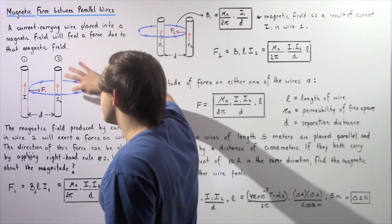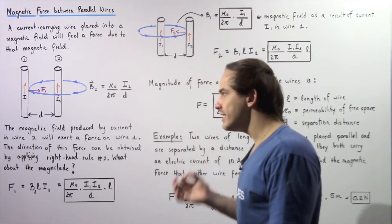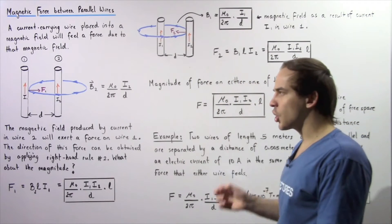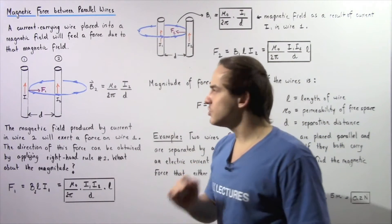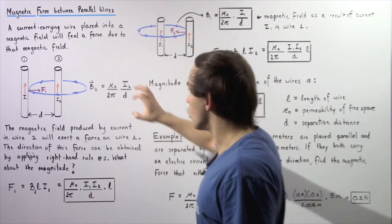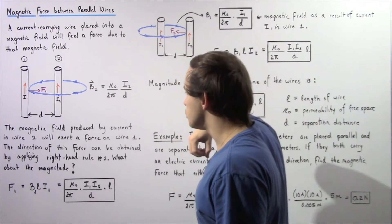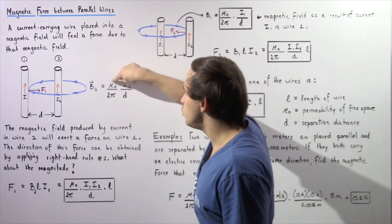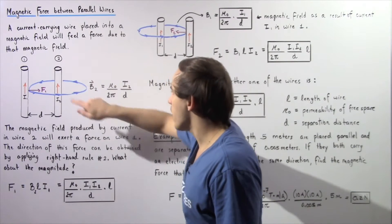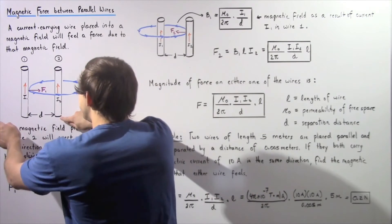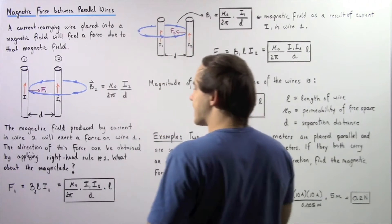Let's examine the magnetic field B2 produced by wire number two. The electric current I2 in wire two produces a magnetic field whose magnitude is given by: B2 = (μ₀ / 2π) × (I2 / d), where d is the perpendicular distance from wire number two.